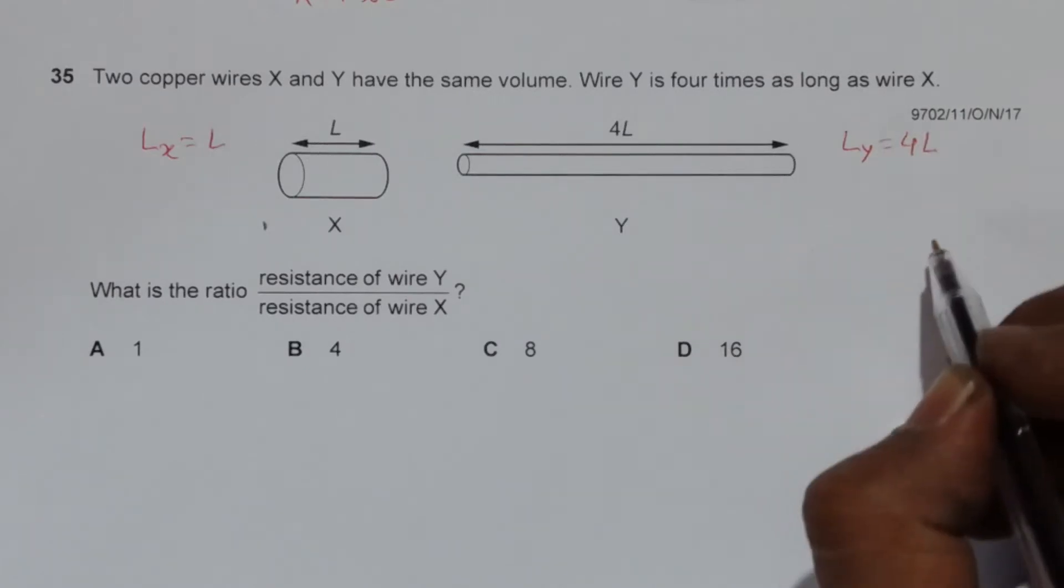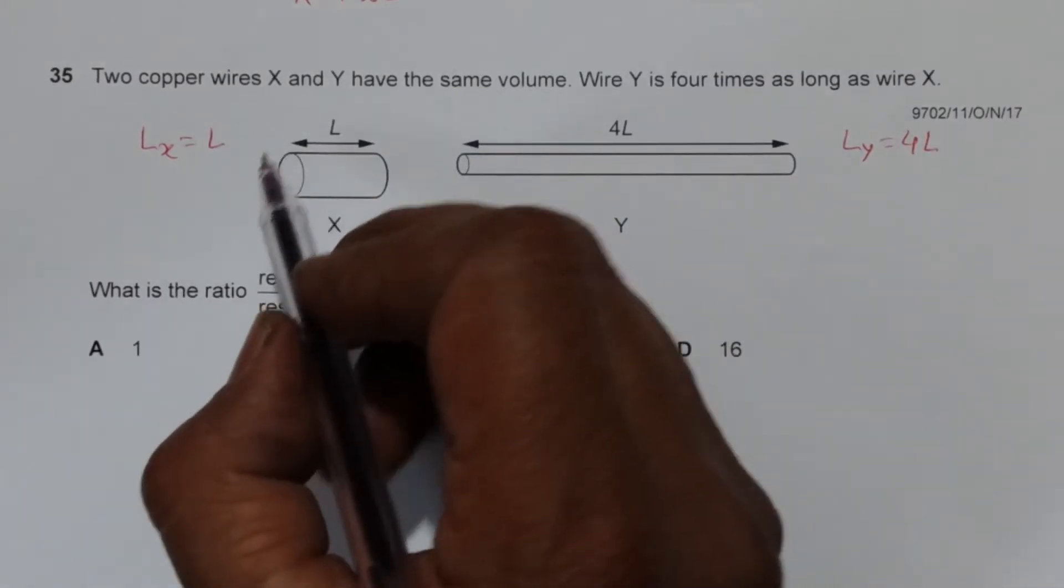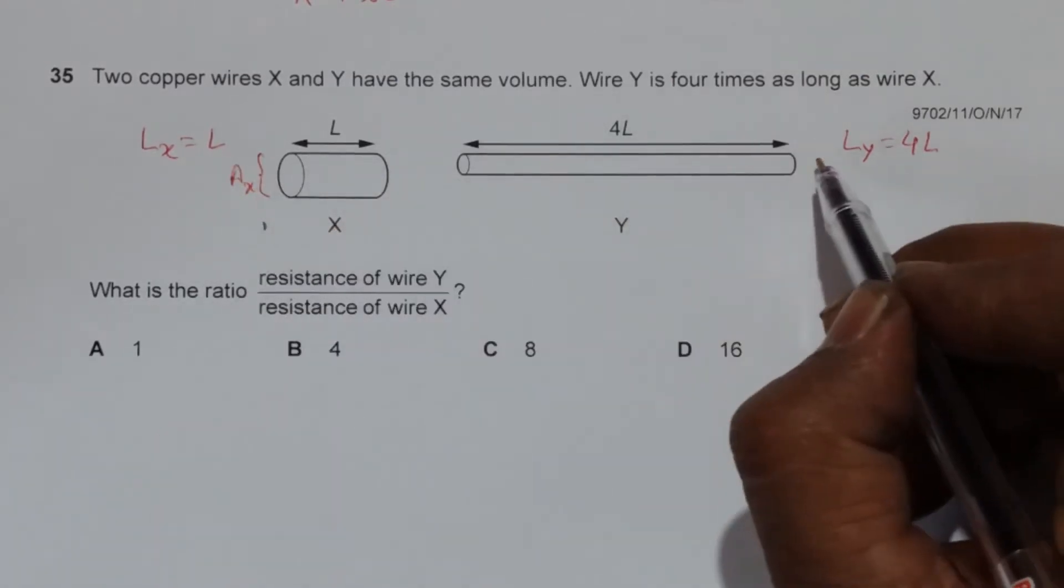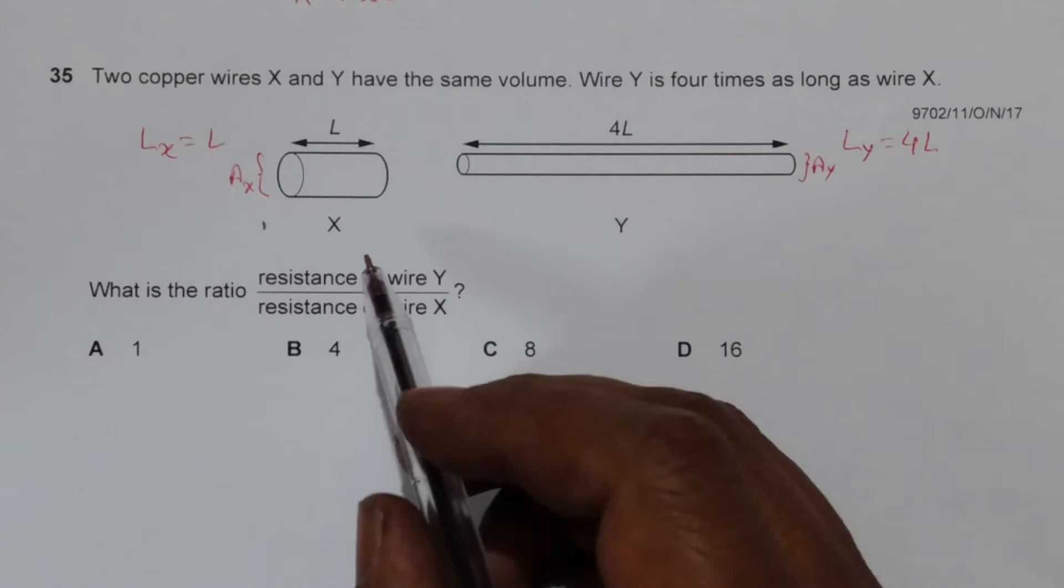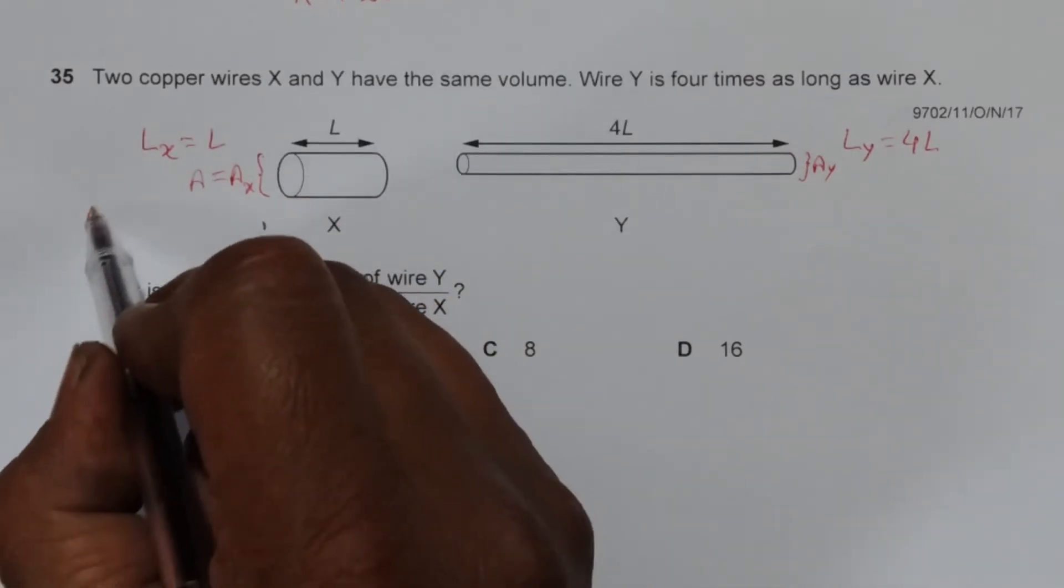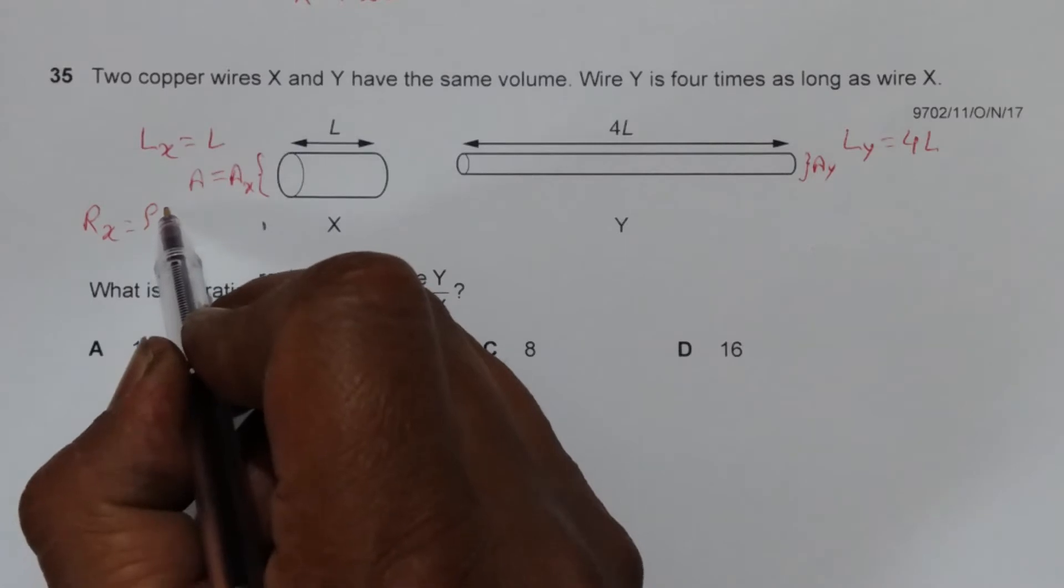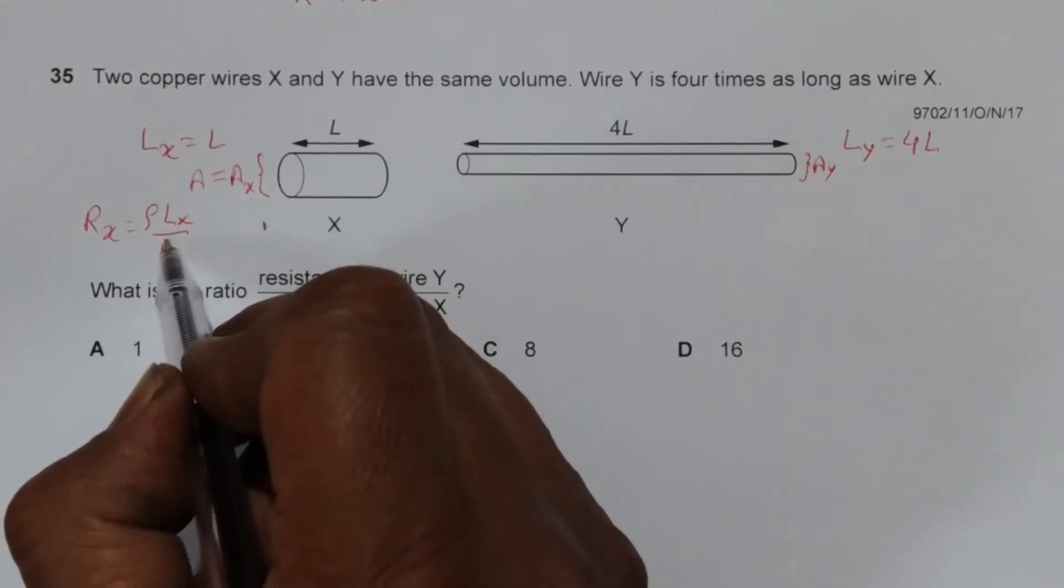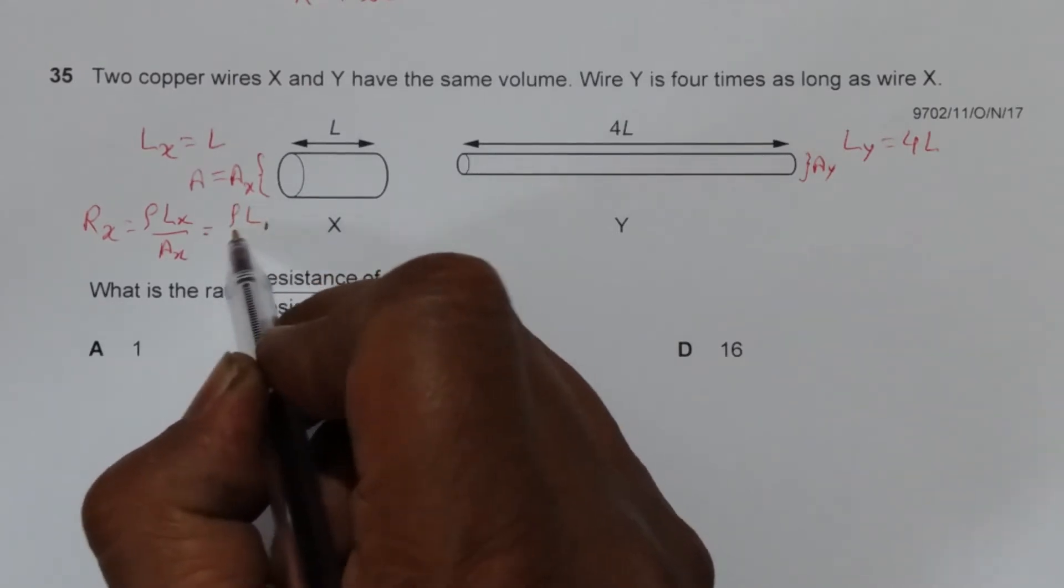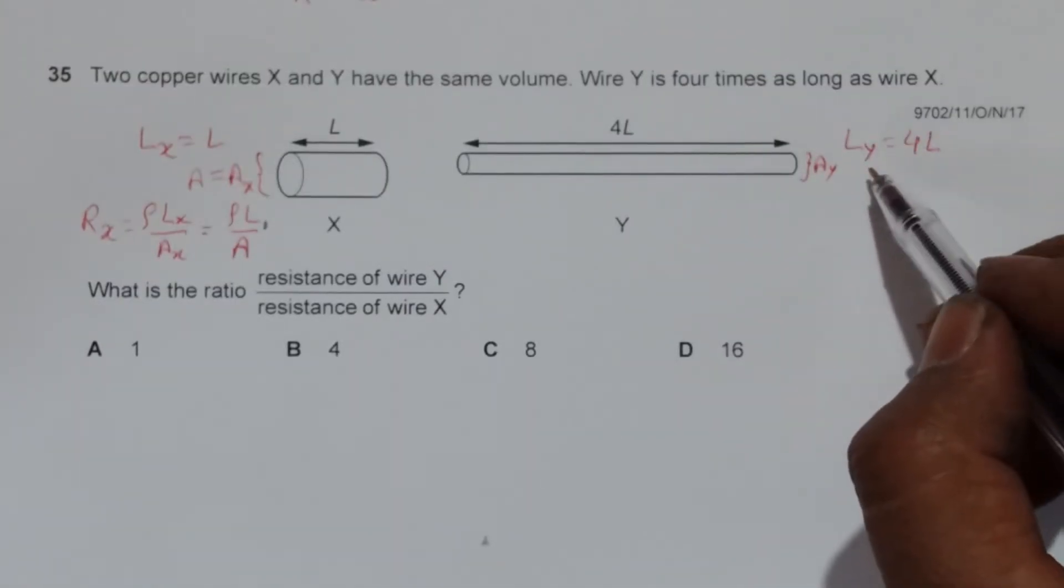Regarding the cross-section, let's say this cross-section is A_X and this cross-section is A_Y. If we name it simply as A, then we have the resistance of X will be equal to ρL_X/A_X, which is equal to ρL/A.